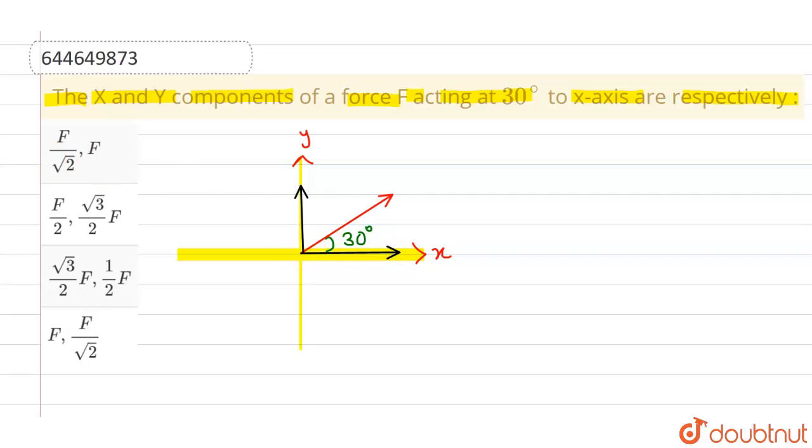Again, we know that the component which is along x-axis will be given by, if this is f, then this will be given by f cos 30 degree. And the component along y-axis will be given by f sin 30 degree.